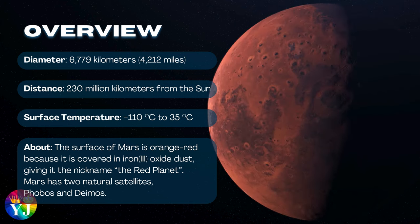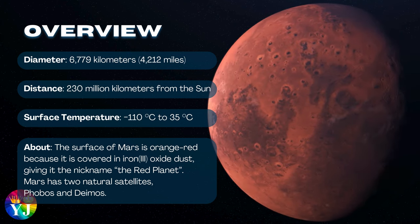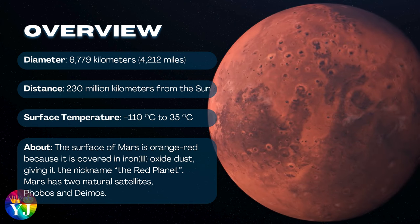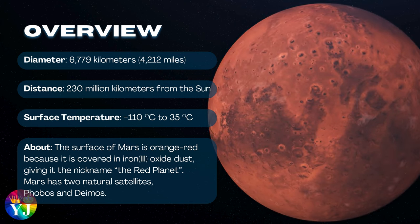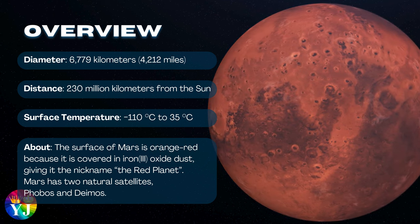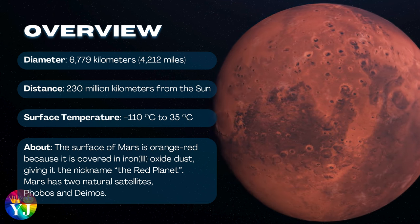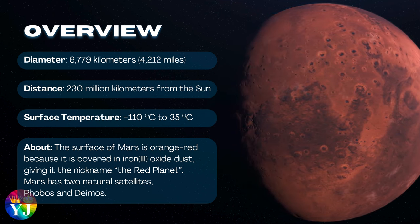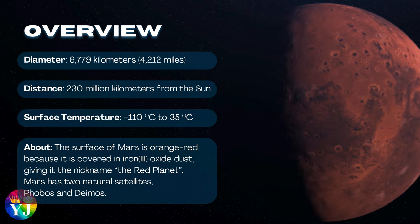About Mars: The surface of Mars is orange-red because it is covered in iron oxide dust, giving it the nickname The Red Planet. Mars has two natural satellites, Phobos and Deimos.